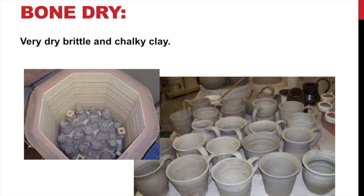Bone dry is very dry, brittle, chalky clay — all the moisture is gone. We let it dry out for a couple of weeks if it's thick, or a few days if it's thin. If you put clay in the kiln and it's not dry, the moisture expands and blows apart your piece. You can tell it's bone dry if it's chalky — wipe your hand on it and you'll get chalk residue. It's very brittle at this stage, so handle it carefully.